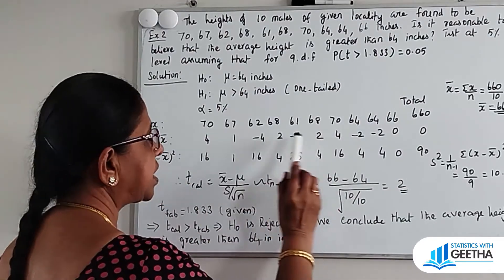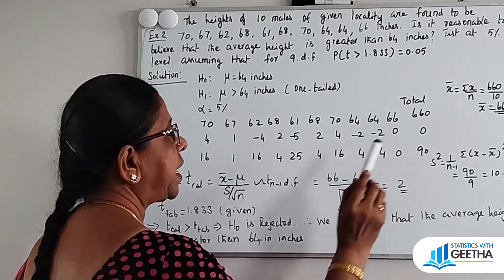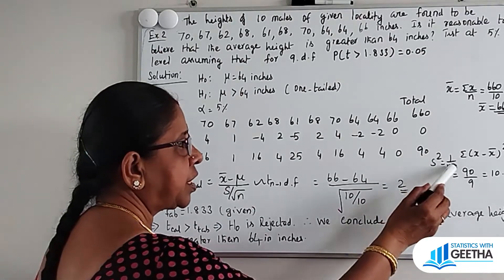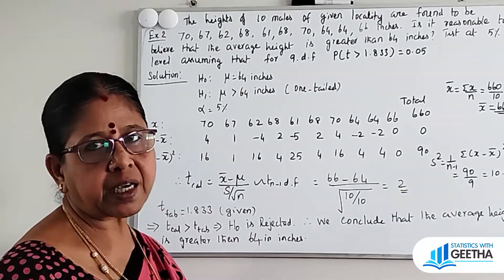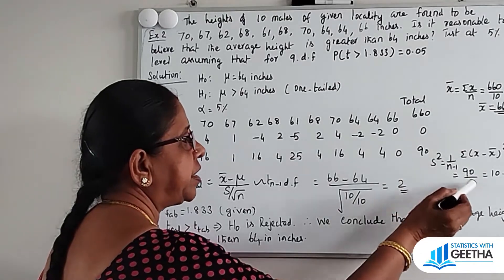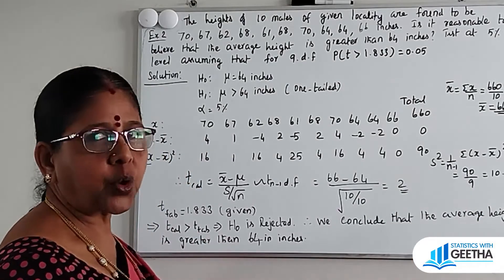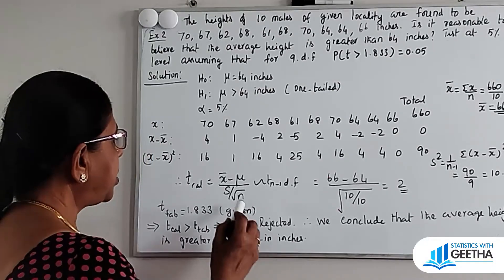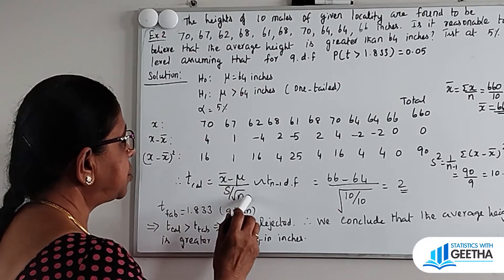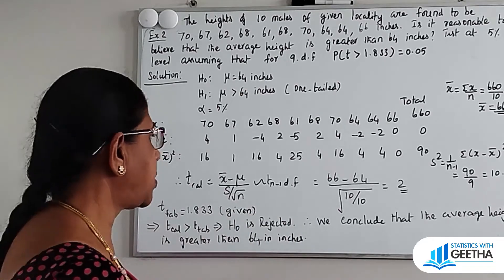Summation of (x minus x-bar) squared equals 90. Capital S squared equals 1 by n minus 1 times summation (x minus x-bar) squared, so 90 divided by 9 equals 10. So S squared equals 10, and S equals root 10. T calculated equals x-bar minus mu by S by root n, with n minus 1 degrees of freedom.